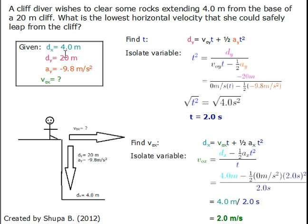Our horizontal distance is 4.0 meters, our vertical distance is 20 meters, and our vertical acceleration is negative 9.8 meters per second squared.